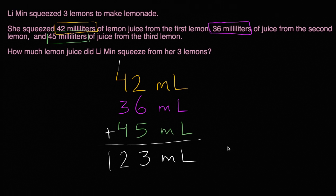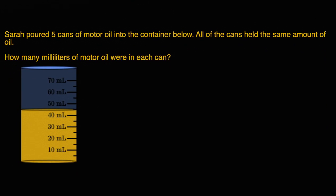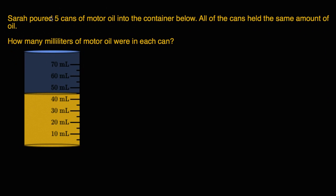Let's do another problem like this. Sarah poured five cans of motor oil into the container below. So this container below has, let's see, this is halfway. It's filled up after she poured the five cans, and it's filled up halfway between 40 and 50.